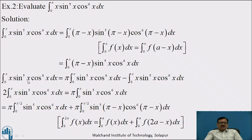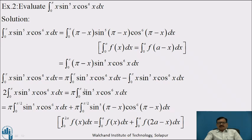Therefore, the integral from 0 to π of x · sin⁵x · cos⁶x dx equals the integral of (π - x) · sin⁵x · cos⁶x dx. Splitting into two integrals: π times the integral from 0 to π of sin⁵x · cos⁶x dx, minus the original integral. Taking the second integral to the left-hand side gives twice the integral from 0 to π of x · sin⁵x · cos⁶x dx equal to π times the integral from 0 to π of sin⁵x · cos⁶x dx.